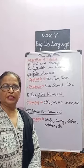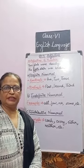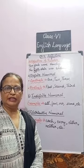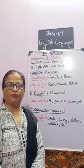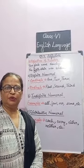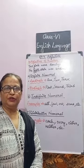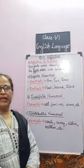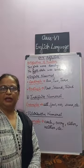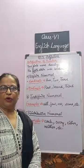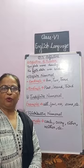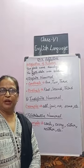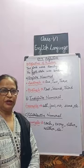Hello students. In kinds of adjectives, we have discussed three adjectives of quality and quantity. Today we will continue with adjectives of number. Adjectives of number tell the number or order of a noun or a pronoun. They answer the question 'how many?' or 'in what order?'